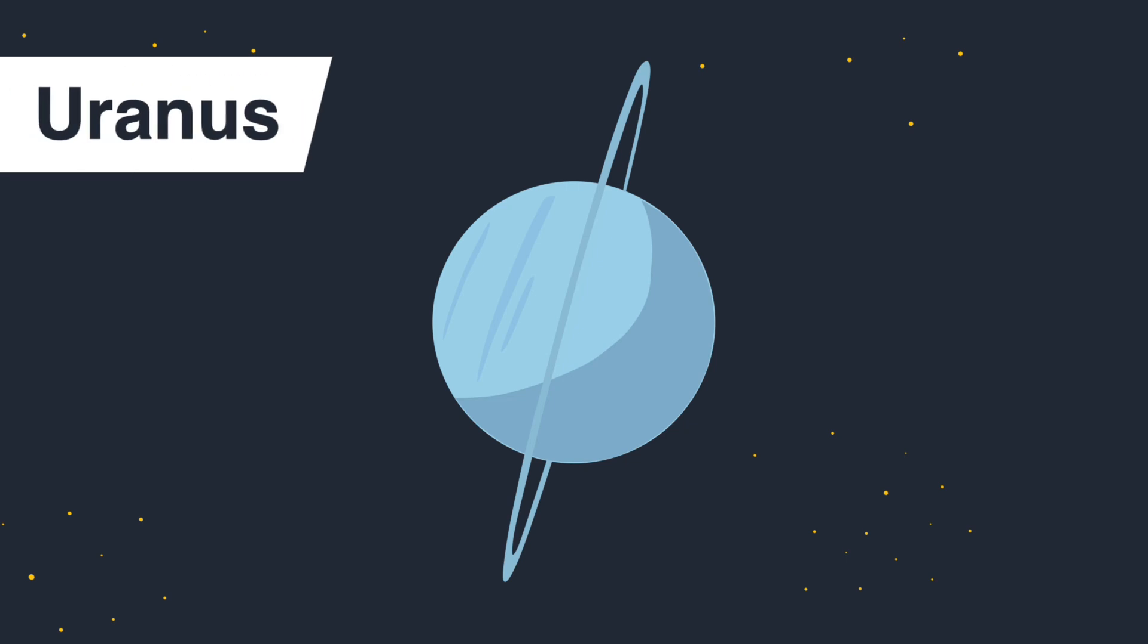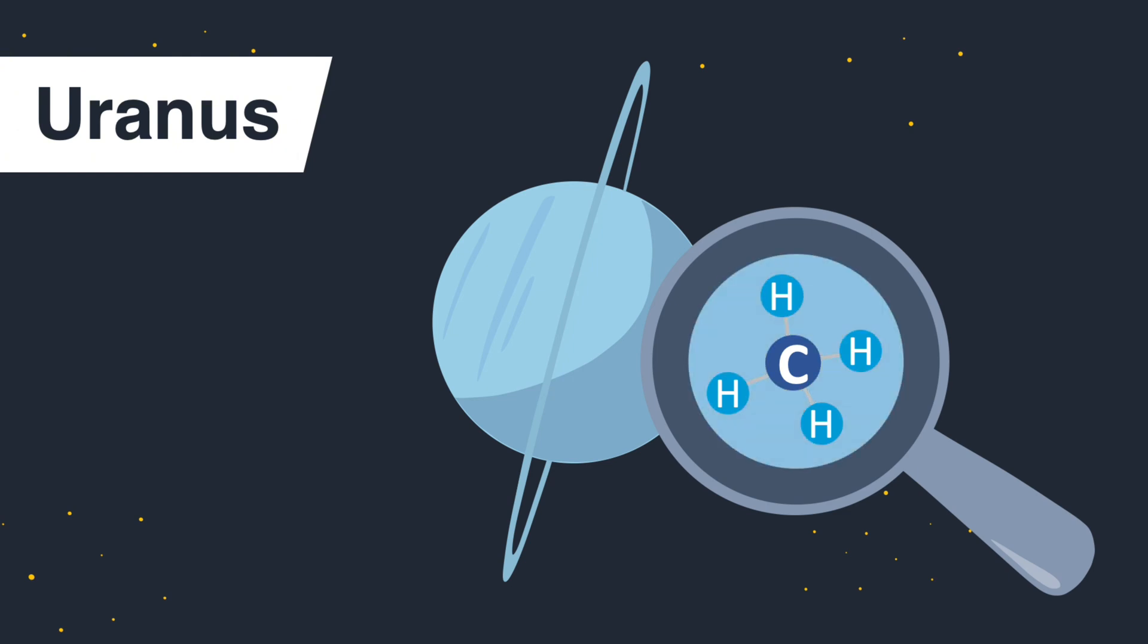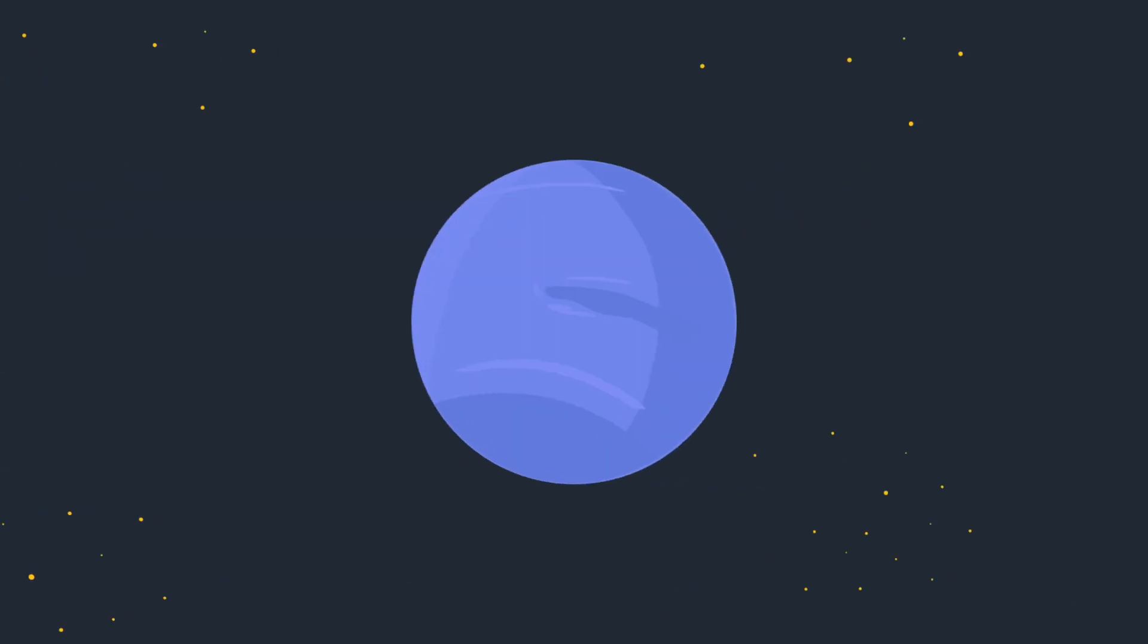The next planet, Uranus, stands out for its unusual tilt. It rotates almost entirely on its side, likely due to a colossal impact in the past. Its pale blue color comes from methane in the atmosphere, which absorbs red light and scatters blue. Uranus is windy and cold, just like its neighbor and the last planet on our list,